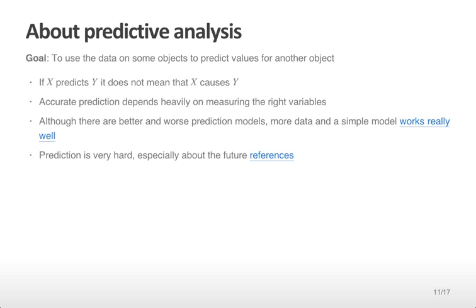Although there are better and worse prediction models, more data and a simple model tends to work very well. This is a link to a presentation called the unreasonable effectiveness of data that shows that a very simple model with a lot of data can end up having a very high prediction accuracy. However, prediction is often very hard and especially about the future. Here's a list of references for people that have said this over time. It's a long list.